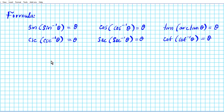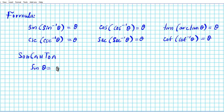Another formula to keep in mind is SOH-CAH-TOA, which shows the relationship between a pair of sides and one of the non-right angles of a right triangle. SOH tells us that sine of an angle is opposite over hypotenuse.